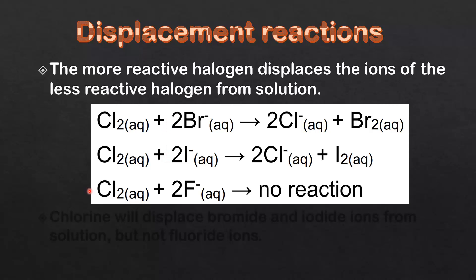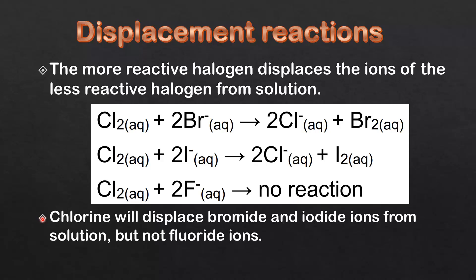In the third example, chlorine is unable to displace the fluoride ions from solution because fluorine is more reactive than chlorine. Therefore we have no reaction. Chlorine will displace bromide and iodide ions from solution but not fluoride ions.